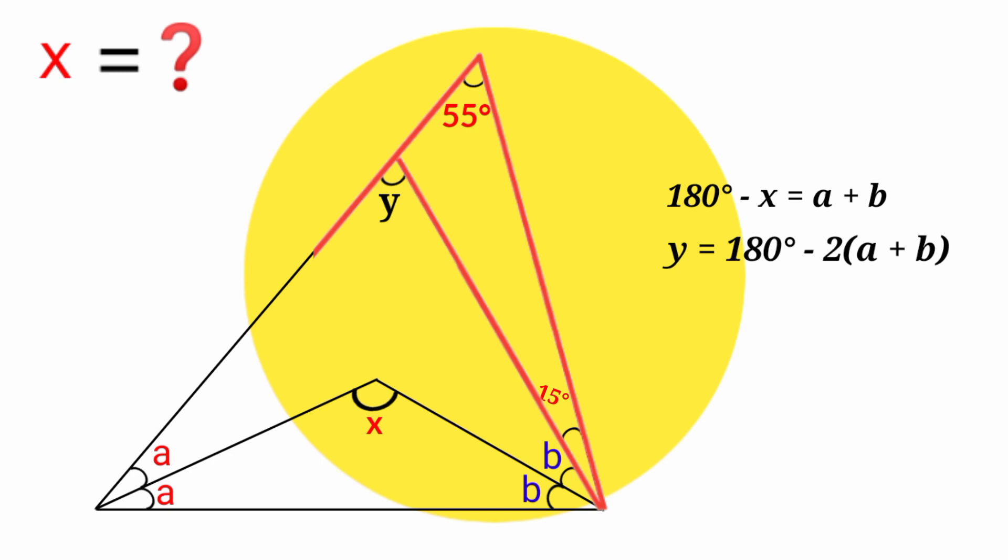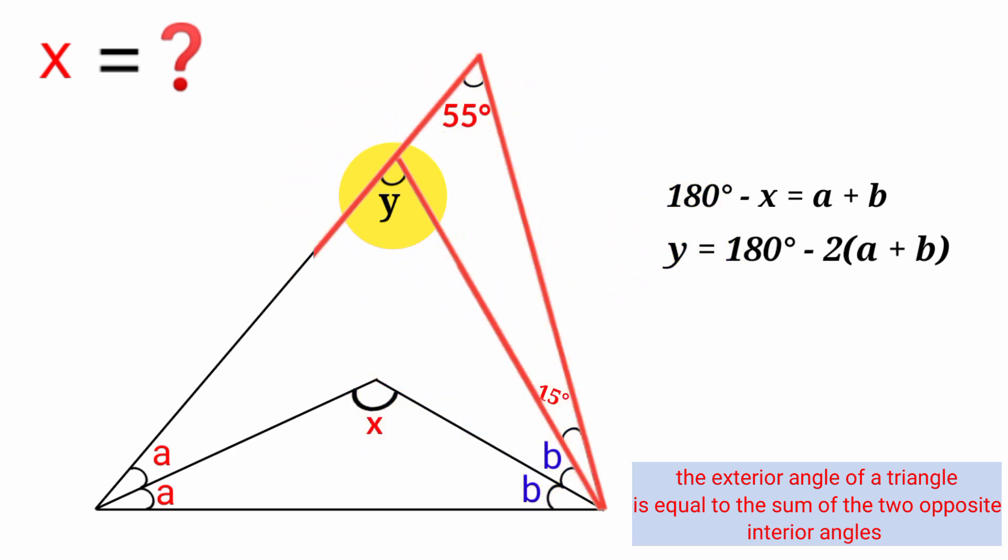But y, we can see here, is an exterior angle of this triangle. And we know the rule that the exterior angle of a triangle is equal to the sum of the two opposite interior angles. That is, y equals the sum of this 55 degrees and this 15 degrees.